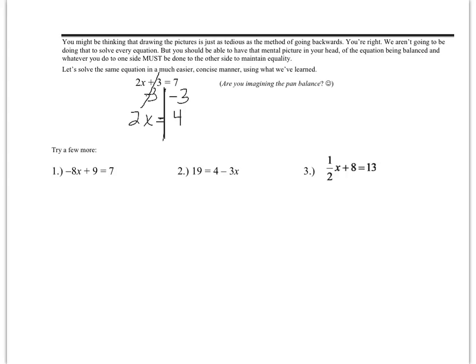Then that equals 7 − 3, which is 4. Now I have 2 times x = 4, so I have to undo multiplication. To undo multiplication I divide both sides by 2. On the left, 2 divided by 2 is 1, and 1 times x is just x because of the multiplicative identity property. On the right, 4 divided by 2 is 2. So x = 2. Notice how I showed my work — that's the way I want you to show your work.